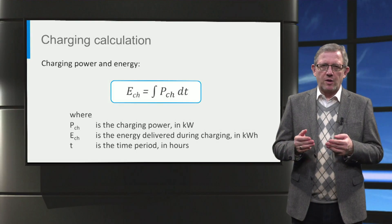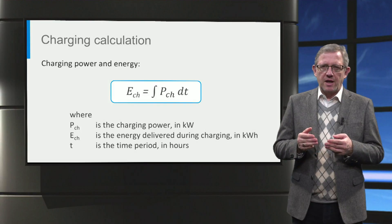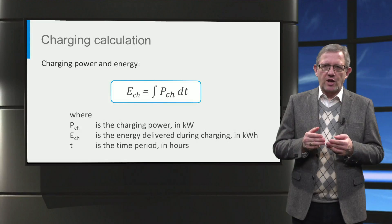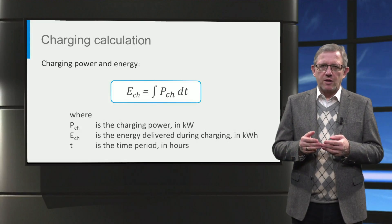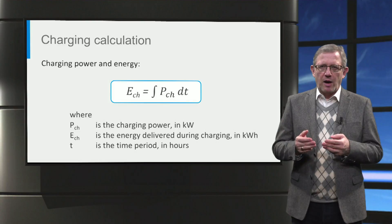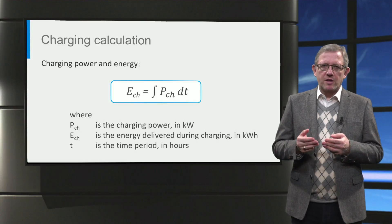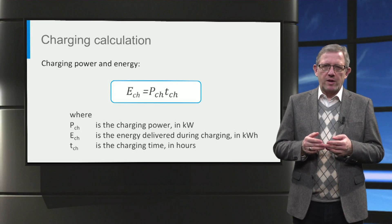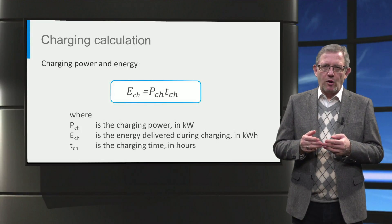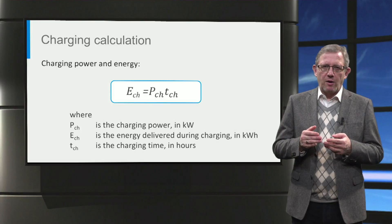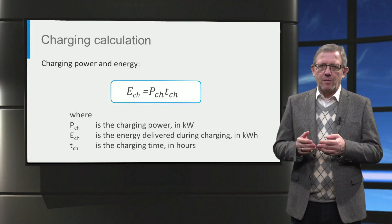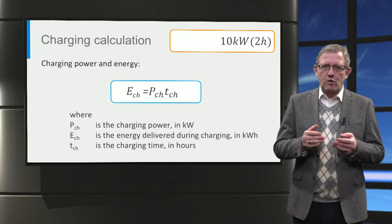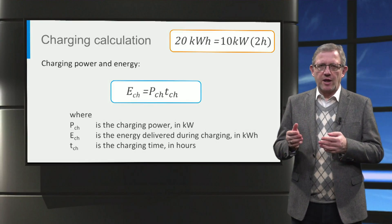Next, the energy delivered to the battery during charging, E-charge, can be estimated as the time integral of the charging power, P-charge. The typical units used for charging time, charging power and energies are hours, kilowatts and kilowatt hours, respectively. If the charging power is a constant, this simply boils to the product of the charging power, P-charge, and the charging time, T-charge. For example, a 10 kilowatt charger used for 2 hours delivers 20 kilowatt hours.